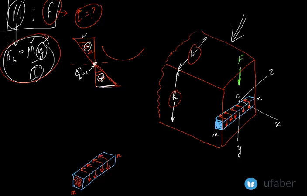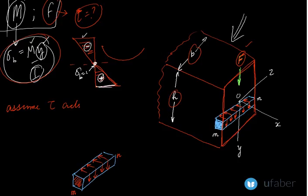We need to find the distribution of shear stress across the cross-section. We assume that tau, the shear stress due to the shear force, acts parallel to the direction of application of the shear force F. This is the first assumption we make in this analysis.